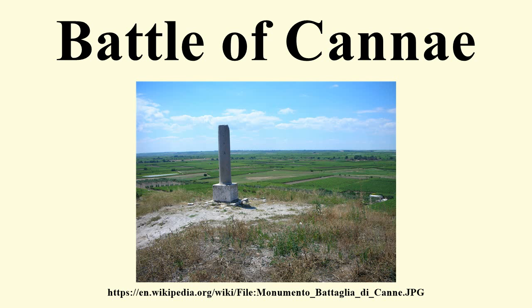Reportedly, a Carthaginian officer named Gisco commented on how much larger the Roman army was. Hannibal replied: another thing that has escaped your notice, Gisco, is even more amazing — that although there are so many of them, there is not one among them called Gisco. Varro, in command on the first day, is presented by contemporary sources as a man of reckless nature and hubris, who was determined to defeat Hannibal. While the Romans were approaching Cannae, a small portion of Hannibal's forces ambushed them. Varro successfully repelled the attack and continued on his way to Cannae. This victory, though essentially a mere skirmish with no lasting strategic value, greatly bolstered the confidence of the Roman army.